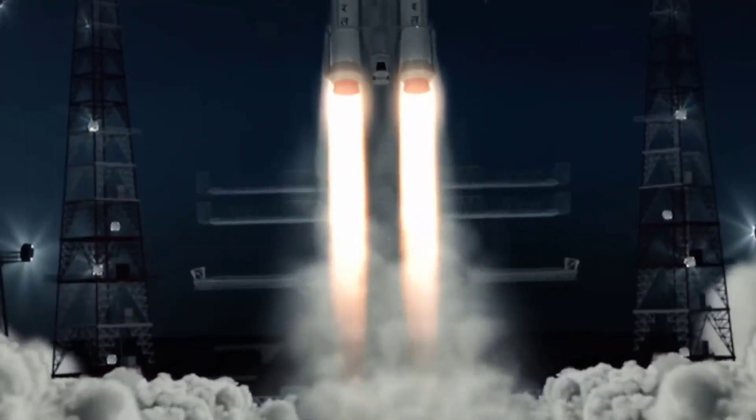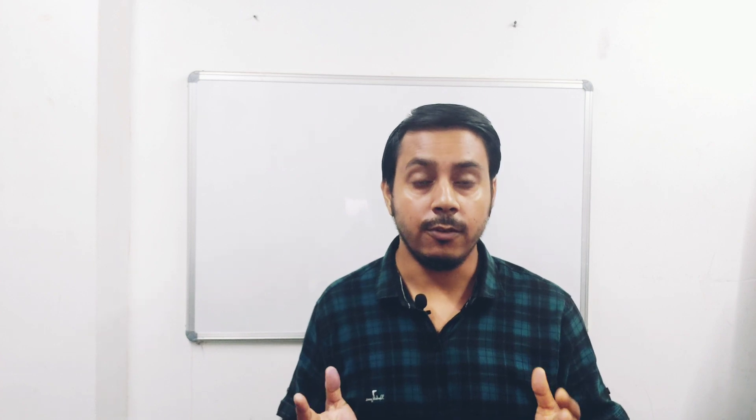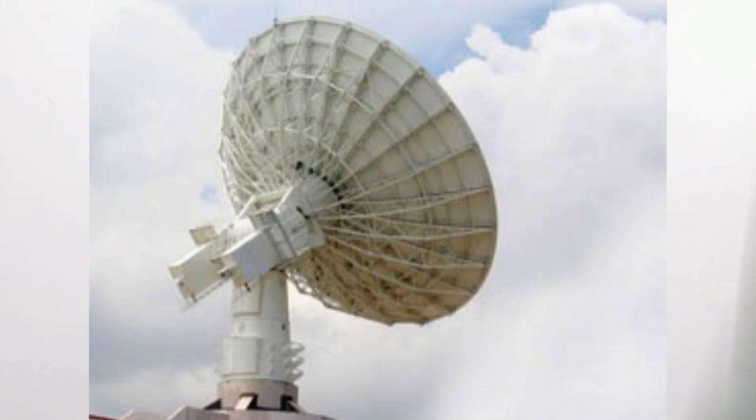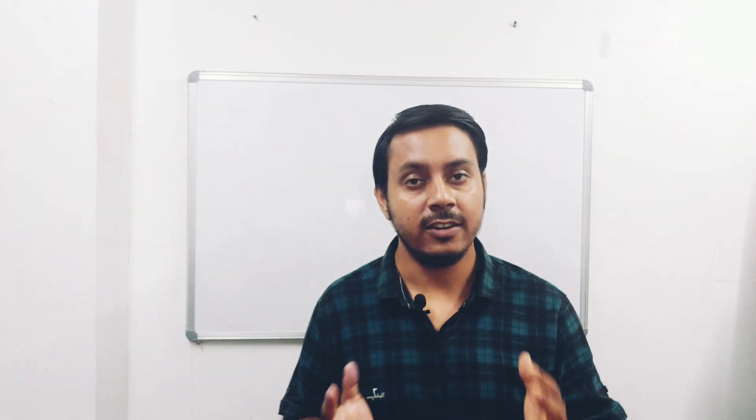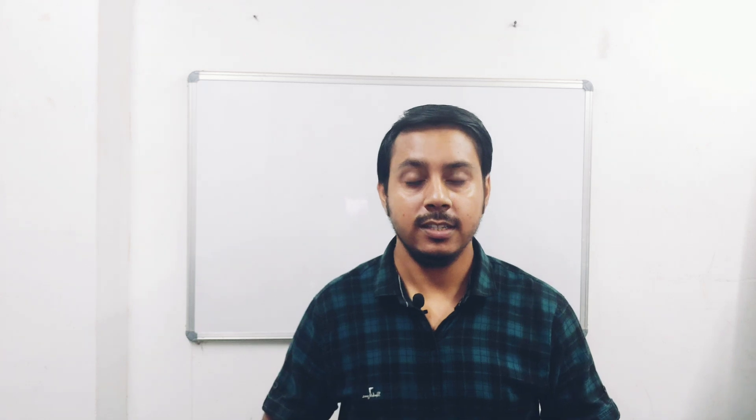The orbiter was a completely successful part of the mission, but the lander had a crash landing on the lunar surface. However, the orbiter sent valuable and important information to ISRO.